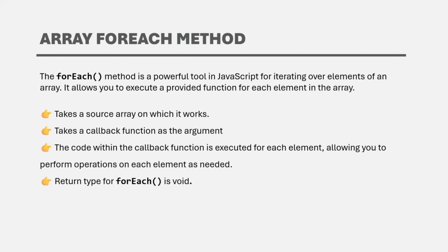The forEach method takes a source array on which it works, and we need to pass a callback function to it. That callback function gets executed for each element of the array. An important point to remember is that the return type of forEach is void — unlike map and filter, it does not return a new array, and unlike reduce, it does not return a single value. The forEach method does not return anything; it simply loops over the elements.